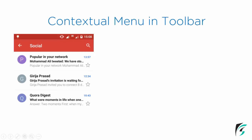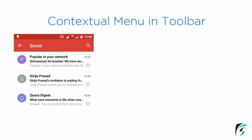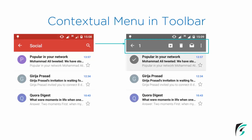Contextual menu in Toolbar - we can see on the left side there is an image of the Gmail application. There is a toolbar with a navigation icon and a title as 'Social'. On the right side we have the menu icon as a search icon. There is a list view showing emails. When we long press one of these items in the list, our Toolbar changes.